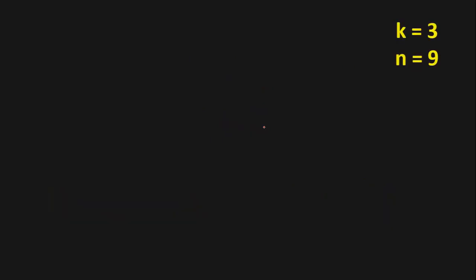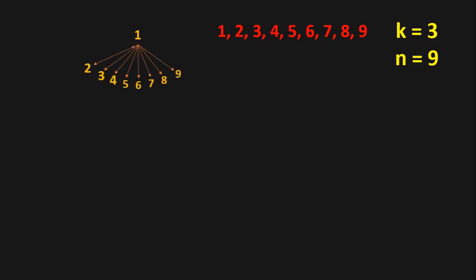Let's suppose k equals 3 and n equals 9, and we have the range of numbers from 1 to 9. First, we can choose the first number. Choosing just one number gives a combination of length 1. From here we can have multiple choices: 1,2 — 1,3 — 1,4 — 1,5 — 1,6 — 1,7 — 1,8 — 1,9.